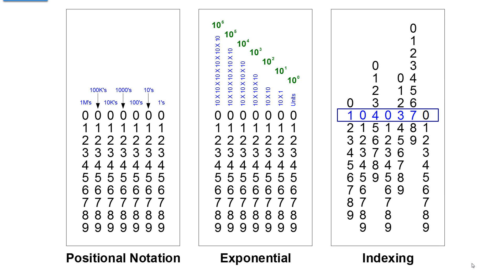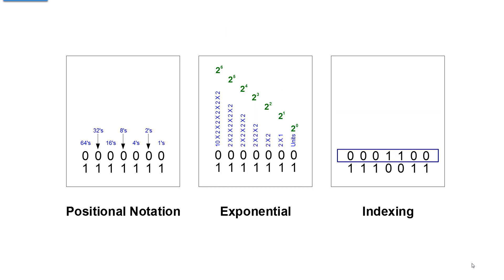Positional notation: one times ten times ten times ten times ten times ten — you understand everything you see here. This is binary, and notice that all of our symbols disappeared. Instead of ten symbols, now we've got only two to work with. Under exponential, instead of units and ten to the first power, we've got: two, four, eight, 16, 32, 64, 128, 256, 512, 1,024, 2,048, 4,096, 8,192, 16,384, and double that — 32,768.